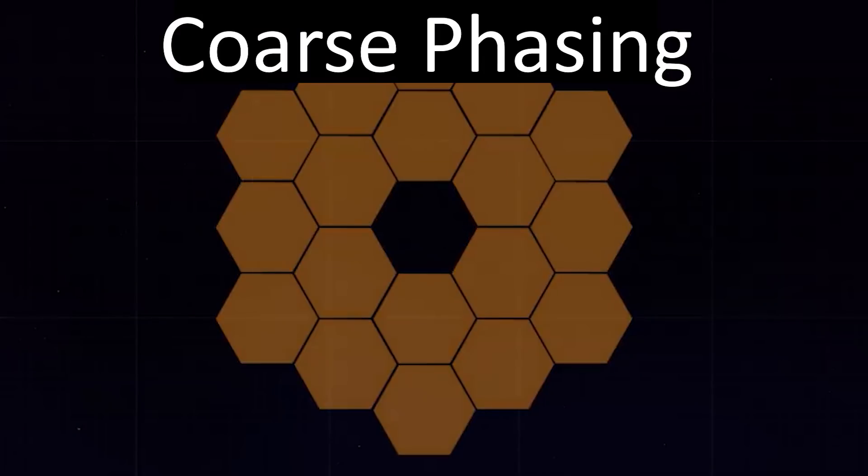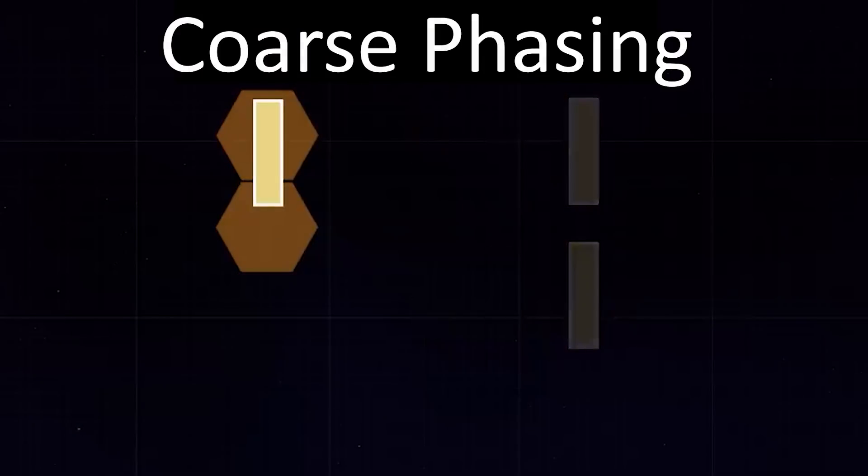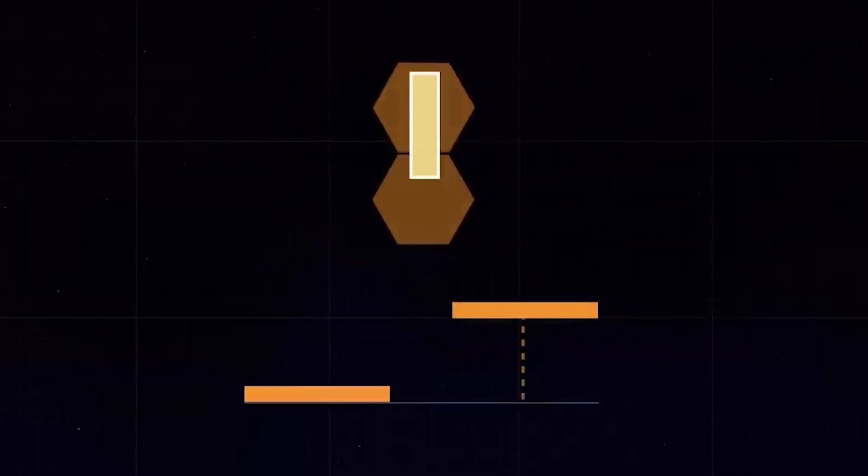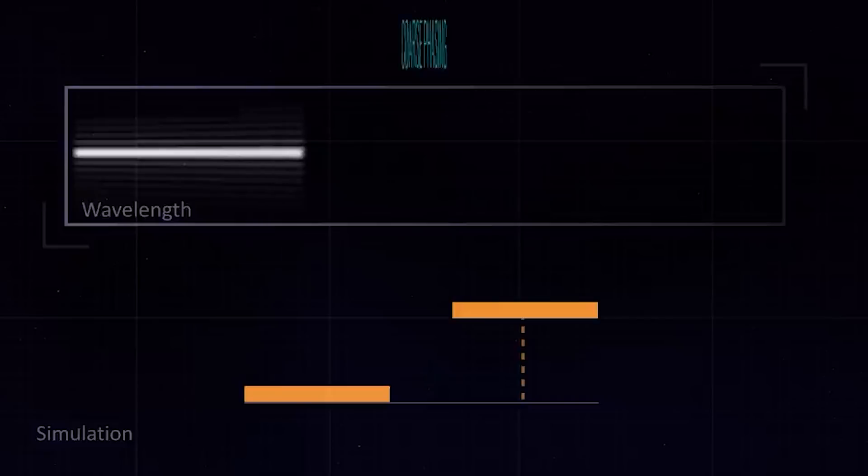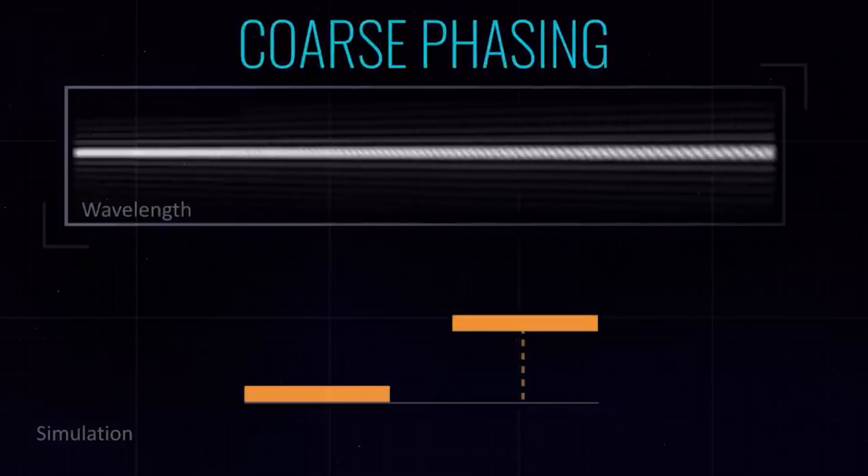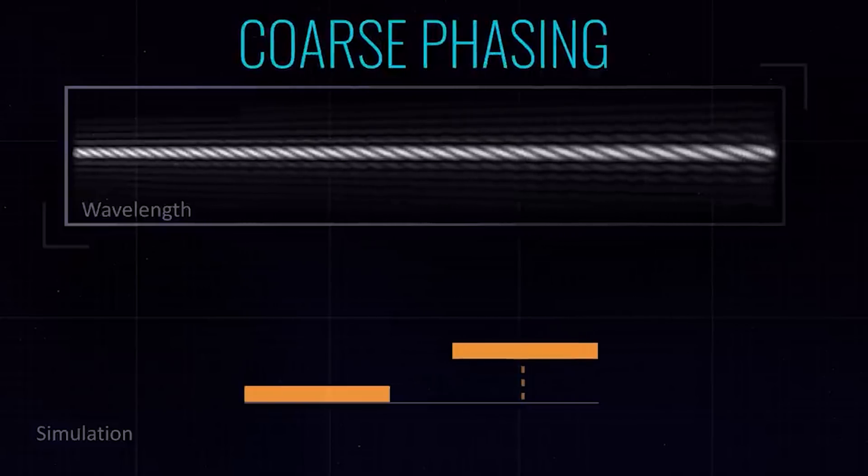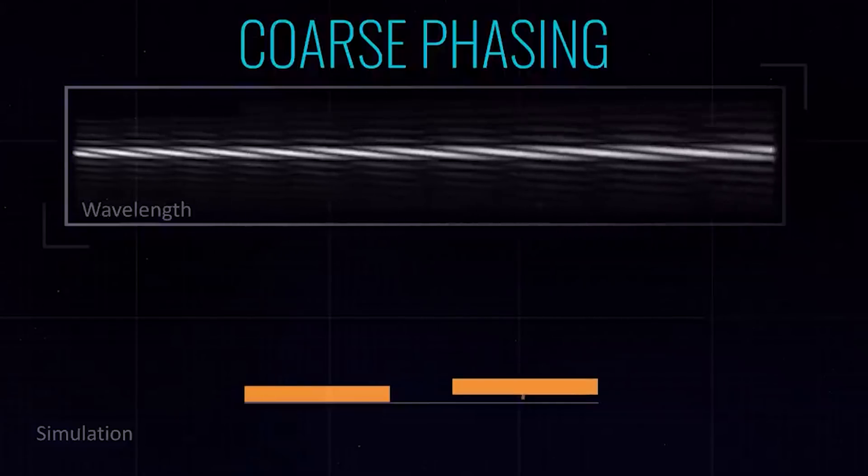At this stage the segments are still acting like individual telescopes and they're not acting like one cooperative unit. The next stage is the one that turns all of these individual segments into a single monolithic instrument. This process is called coarse phasing, and it involves moving the pistons behind the segments to change their height and angle relative to each other, and once they're perfectly in place they all act together to produce a single coherent image.